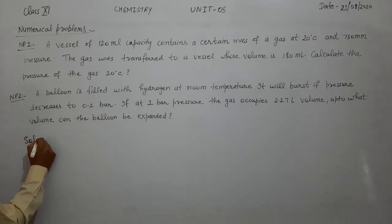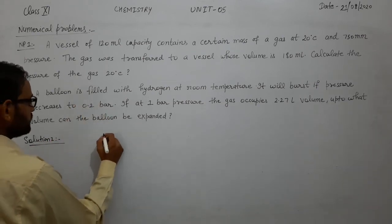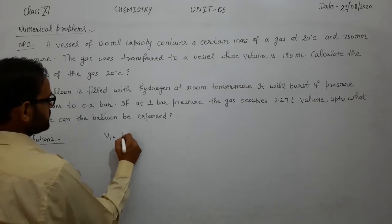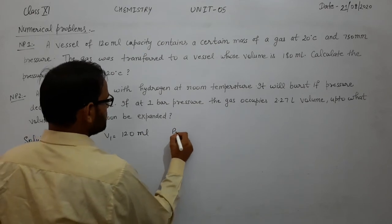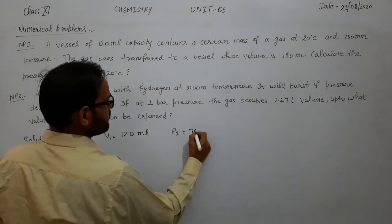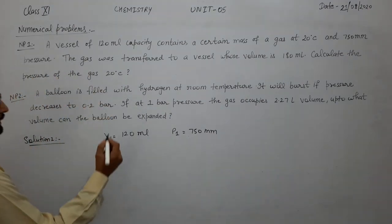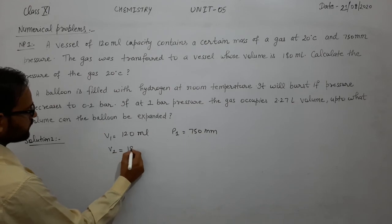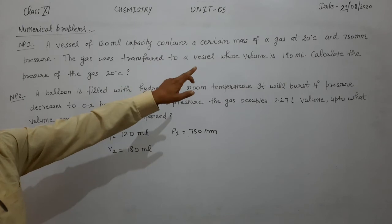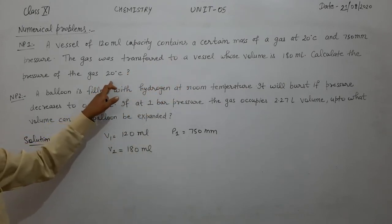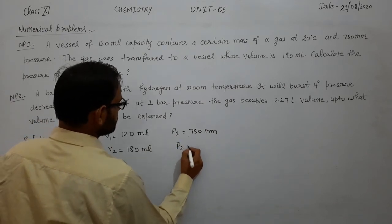Let us see the solution. Given: V1, the initial volume of gas, is 120 ml, and P1 is 750 mm of mercury. After transferring the gas to another container, V2 becomes 180 ml. Temperature remains constant at 20 degree Celsius, so we need to calculate P2.